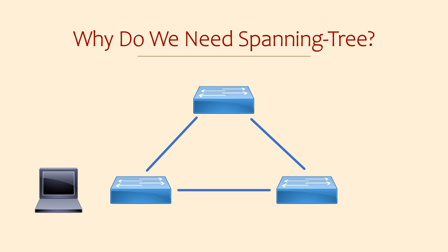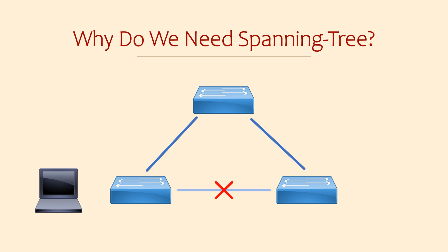So this is where Spanning Tree comes in. Its purpose is to find places where there could be a loop and prevent it from forming in the first place. It does this by selecting one of the links in the loop and blocking it, which prevents frames from travelling around the network indefinitely. But Spanning Tree is also clever enough that it will never block too much — devices will always be able to communicate, and frames can always be delivered no matter where the destination device is.